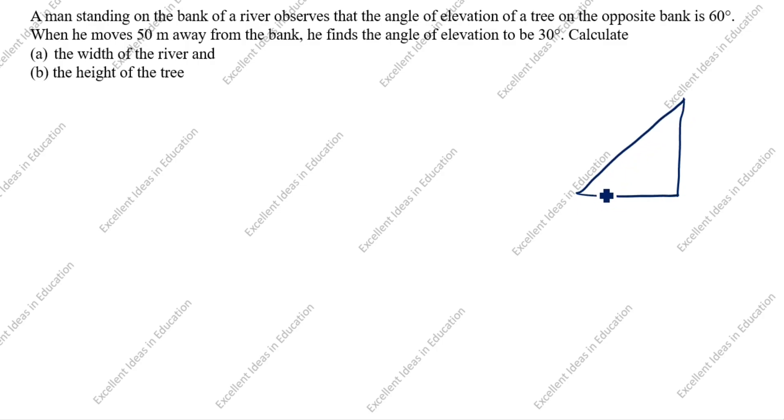So angle of elevation, this is 60. When he moves 50 meters away from the bank, so away from the bank is this, this is the bank, this is 50 meters. He finds the angle of elevation to be 30 degrees. So this angle of elevation is 30 degrees.